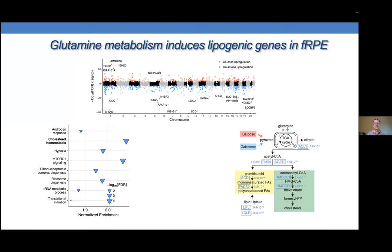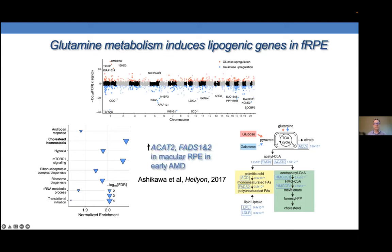I'm not entirely clear why cells are also upregulating lipid uptake while making so much endogenous lipid, but another group has shown that in early AMD, some of these same genes are being upregulated in the macular RPE — so this metabolic perturbation may be modeling some features of early AMD. To get to the main event: we sought to identify eQTLs and were fortunate that the RASQUAL program came out about this time, since it was shown to work with as few as 24 samples.